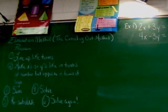The steps are listed for you in the left-hand column. Step one says to line up the like terms. Step two, make X's or Y's like in terms of number but opposite in terms of sign. Step three is to sum. Step four, solve. Step five, resubstitute. And then step six, solve again.